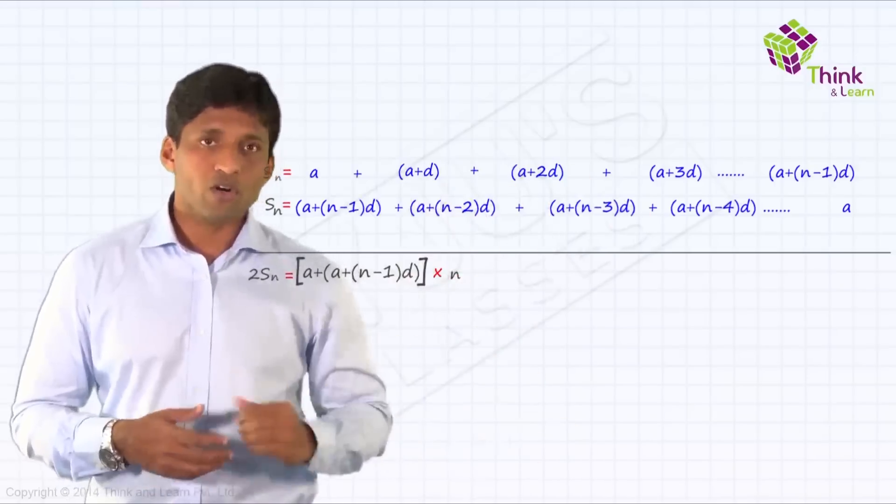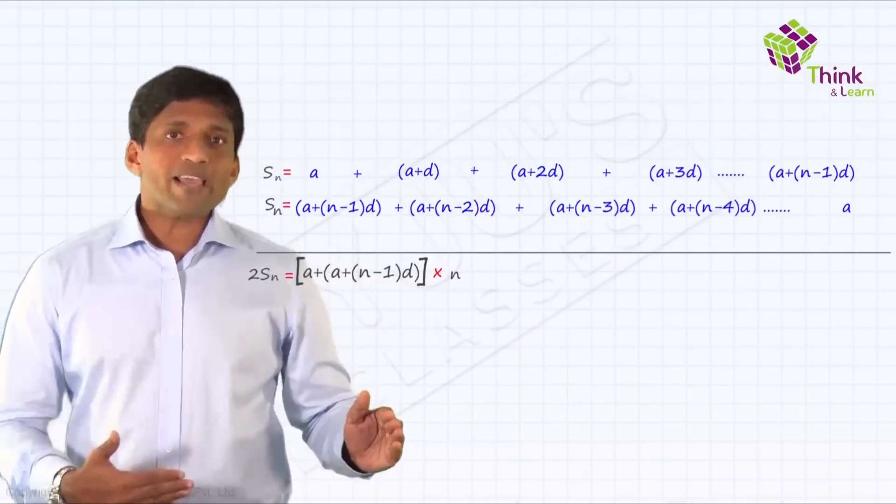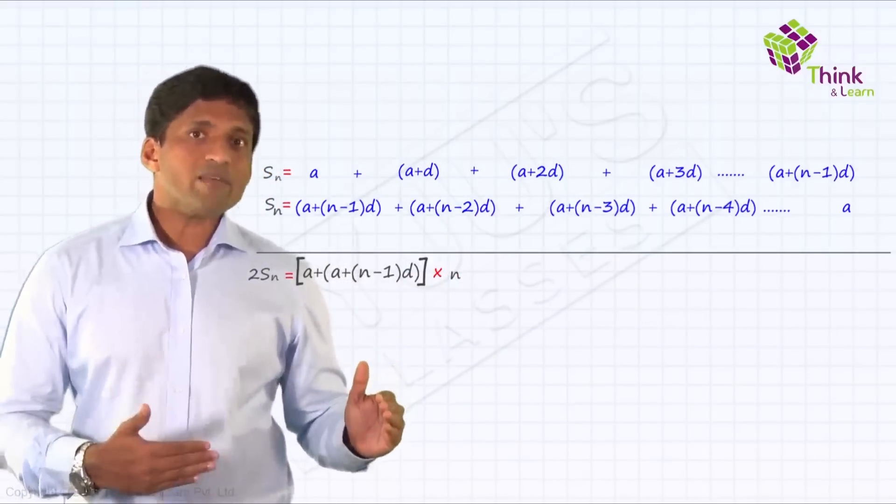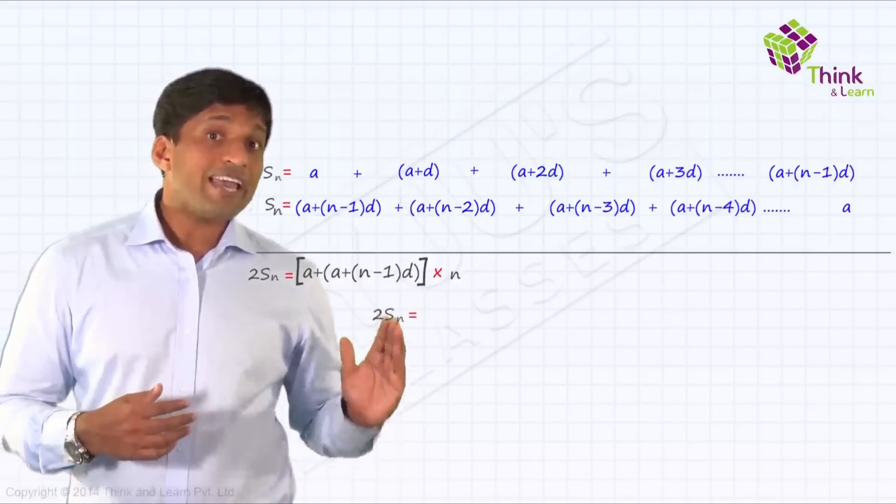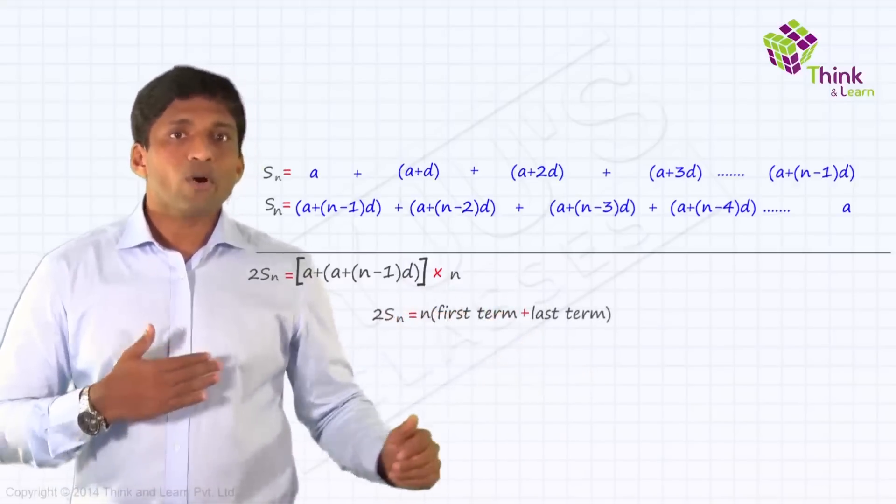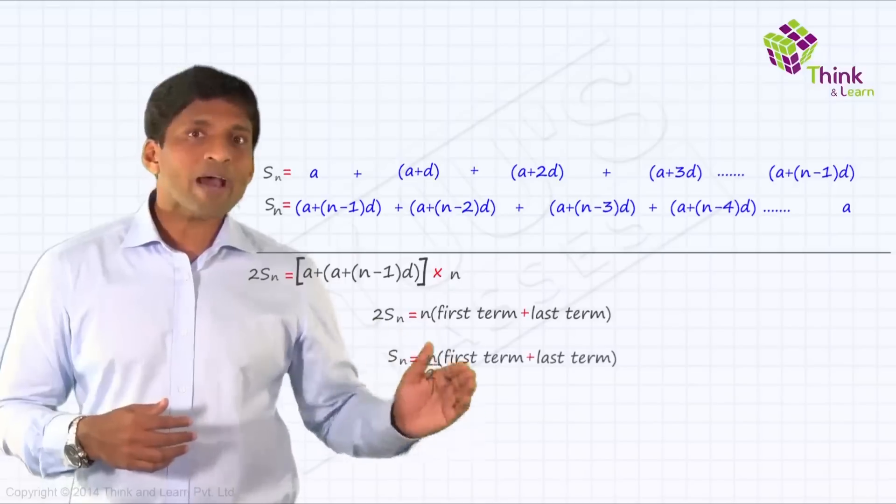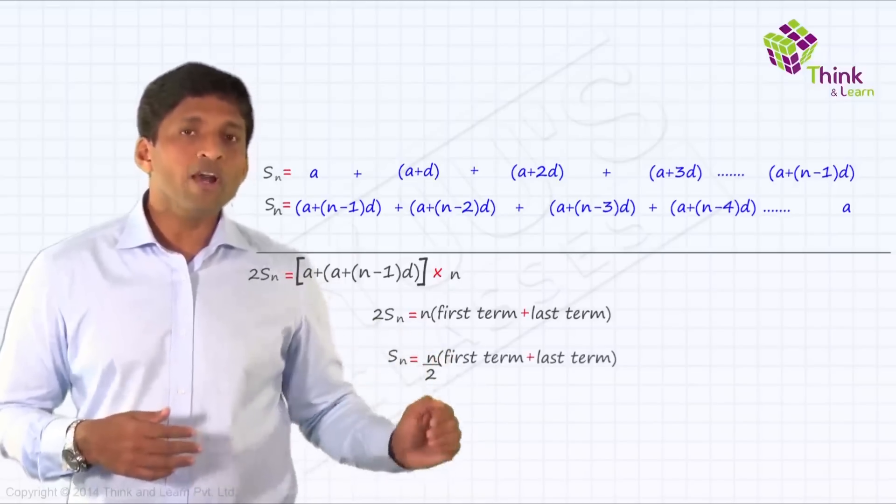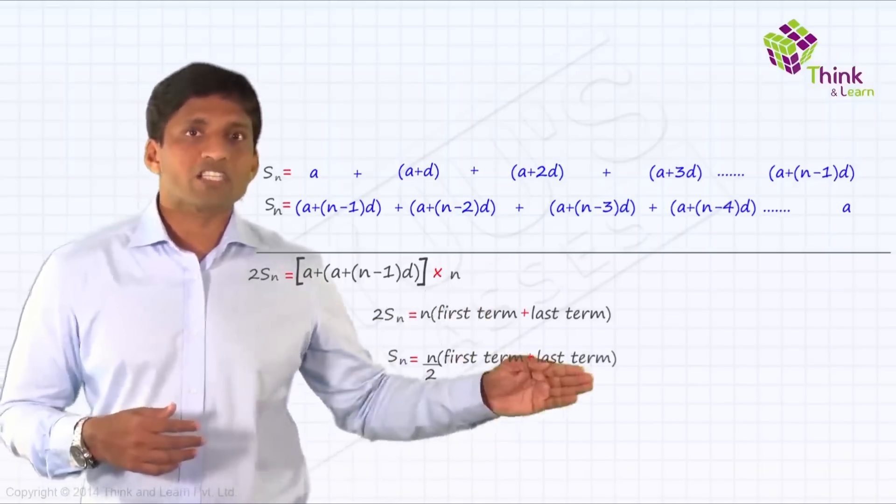This will happen N times as you can see here. So 2 times Sn is N times first term plus last term. So Sn is N by 2, this 2 if I take it to the right, N by 2 into first term plus last term.